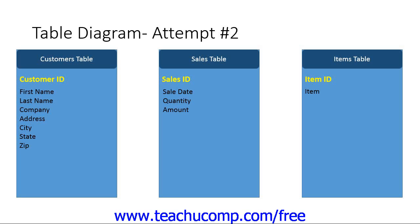So the data model would then look something like this. Now, the primary key is a very important concept in a relational database because it's through the primary key assignment that you create the necessary relationships between the data tables. For example, examine the relationship between the customers table and the sales table in terms of one-to-one and one-to-many relationships. In this case, for each one customer, there can potentially be many sales — so the tables will share a one-to-many relationship.